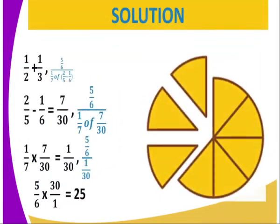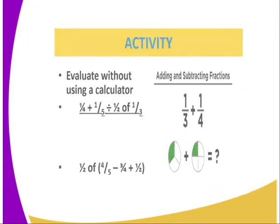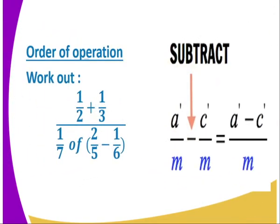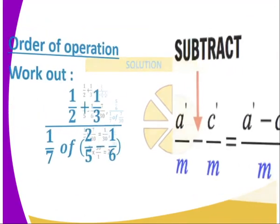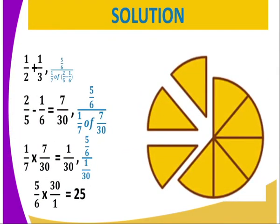Now, we go to the denominator, whereby we are going to get the number in brackets. Whatever is in the brackets is being represented by 2 over 5 minus 1 over 6. When we subtract the 2, we are going to get 7 over 30. And now, we have got 1 over 7 of, off means multiplication. So we are going to get 1 over 7, we will multiply it by what we have gotten in the brackets. And remember, we have gotten 7 over 30.